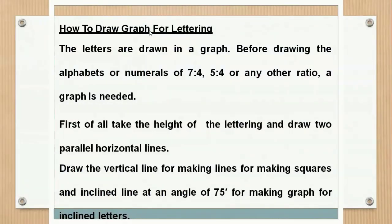To draw a graph for lettering, letters are shown in a graph with a ratio of 7:4, 5:4, or any other required ratio. First, take the height of the lettering and draw two parallel horizontal lines. Then draw vertical lines for making squares, and inclined lines at 75 degrees for making a graph of inclined letters.